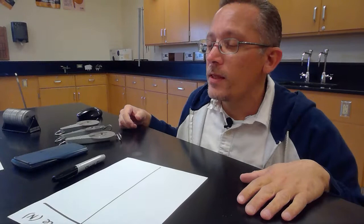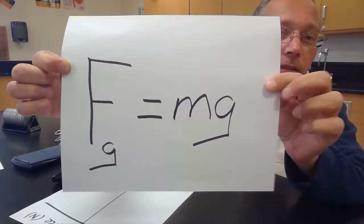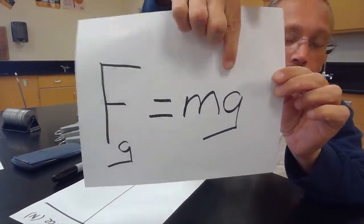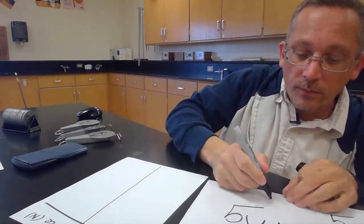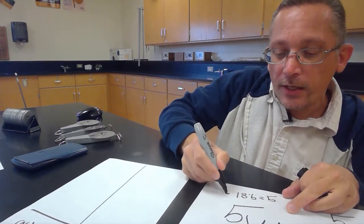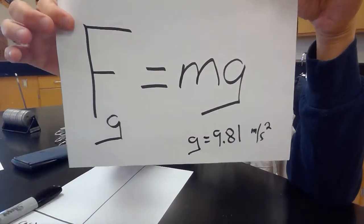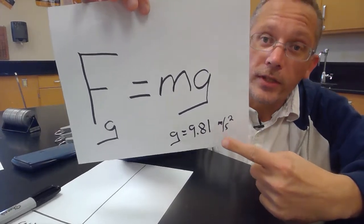You might recall that we talked about in the last lesson the force of gravity. The force of gravity is equal to the mass of the object times the acceleration due to gravity. If you recall, the acceleration due to gravity was 9.81 meters per second squared, and so our little lab activity that we're going to do here today is going to be to find the acceleration from gravity.